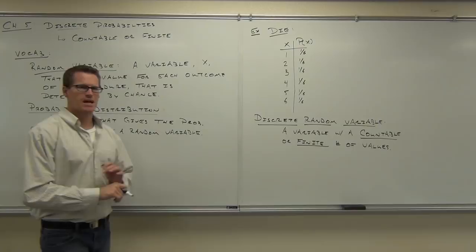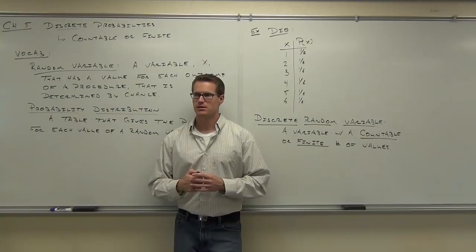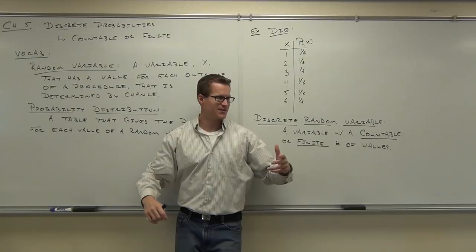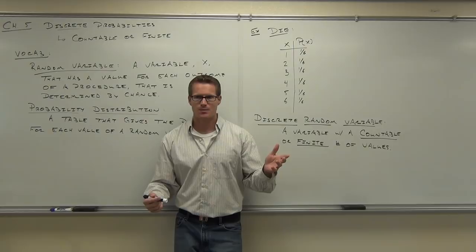Examples of discrete: if I counted the people in this classroom, that would be discrete because I couldn't get something like 42.3785 people — you're going to get a whole number. Or, if you count the number of eggs a chicken can lay in a week — is it going to lay 3.2 eggs? No. That's discrete: whole numbers, countable, finite.